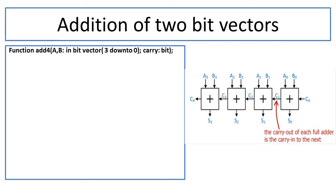The formal parameter list has A and B as input bit vectors with length 3 down to 0, so they will have values from A3 to A0 and B3 to B0. The initial carry is named 'carry_in' and it is of type bit, which is a single value. After this we write the return type. Since we need to return two values — the sum and the carry — we use return type bit_vector. We need to return S3, S2, S1, S0 and carry, so we write return bit_vector.